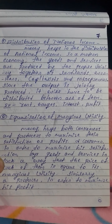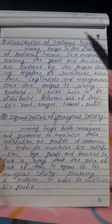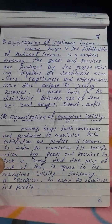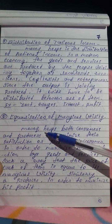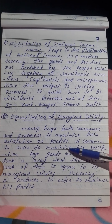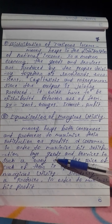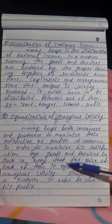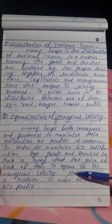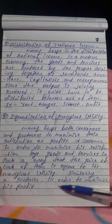Point number two: Equalization of Marginal Utility. Money helps both consumers and producers to maximize their satisfaction or profits. A consumer, in order to maximize satisfaction, buys goods and services in such a way that the price of each of them is equal to its marginal utility.